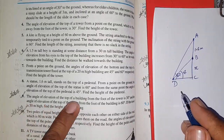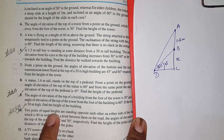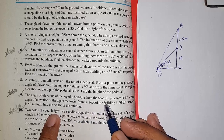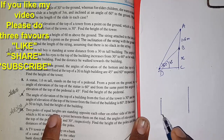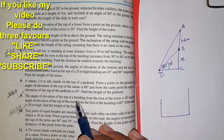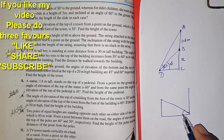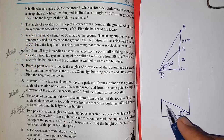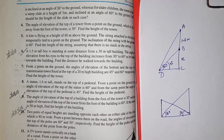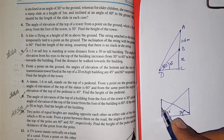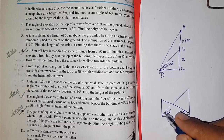Moving to question 9 — the angle of elevation of the top of a building from the foot of the tower is 30 degrees. This sum is a little difficult; we have to find out which is bigger, the building or the tower. Since 30 degrees is smaller, the opposite side — the building — is smaller. Greater the angle, larger the opposite side, as we learned in 9th standard.